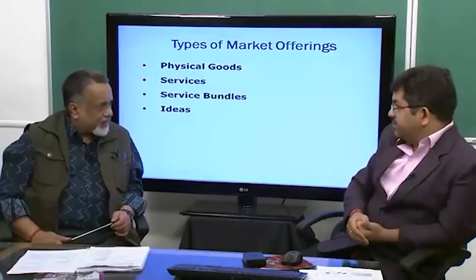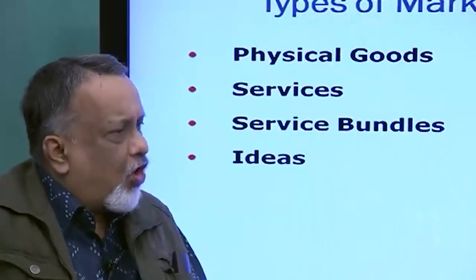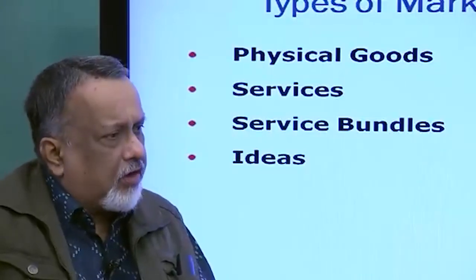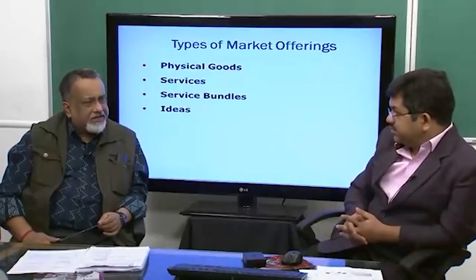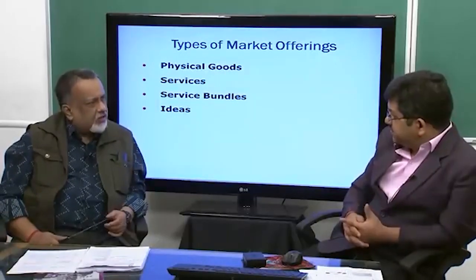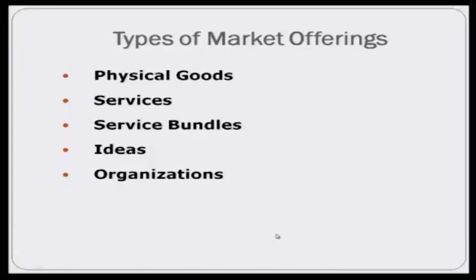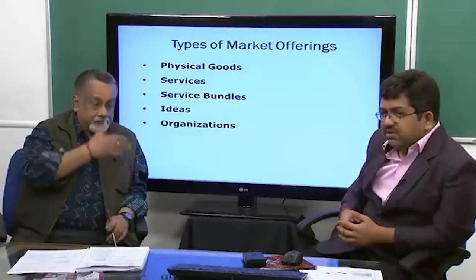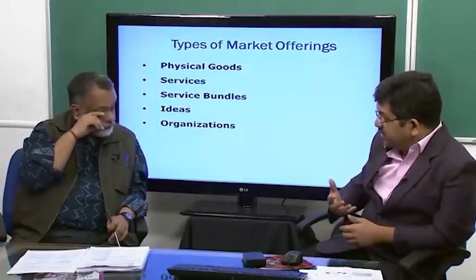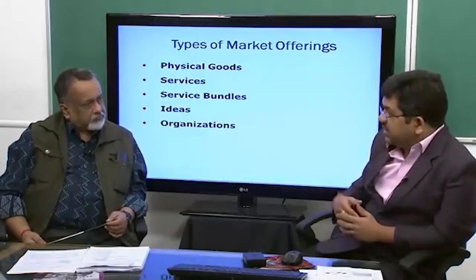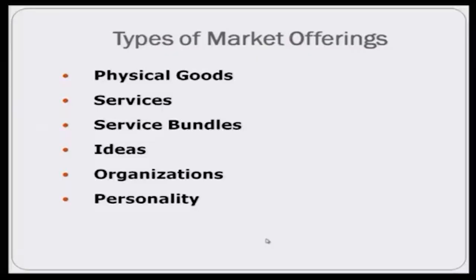Along with idea marketing, we also have cause marketing — for example, girl child education, mother and child health, or rural health. These are now very powerful marketing areas. Then there is organization marketing: organizations are marketed to their employees, investors, different types of stakeholders, and to society at large. Many organizations these days promote their mission statements heavily in society to generate a favorable response from society.